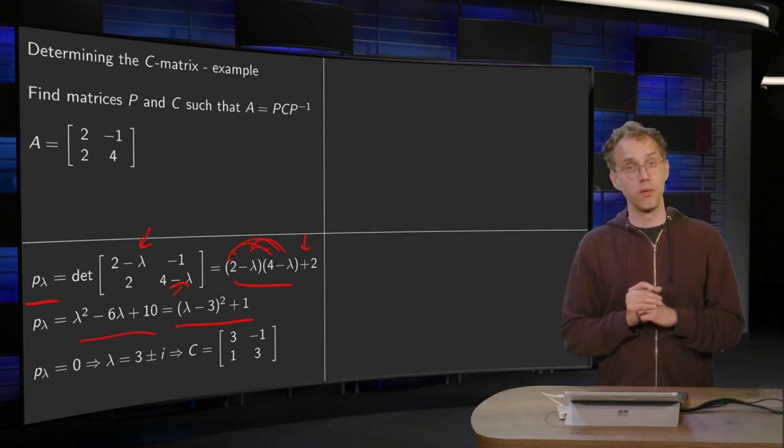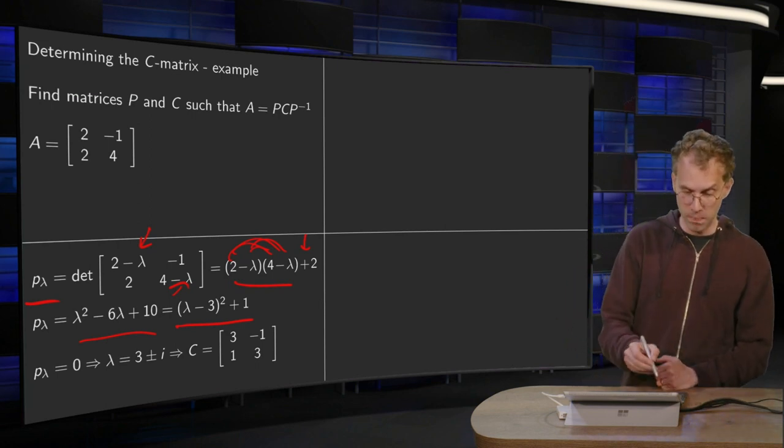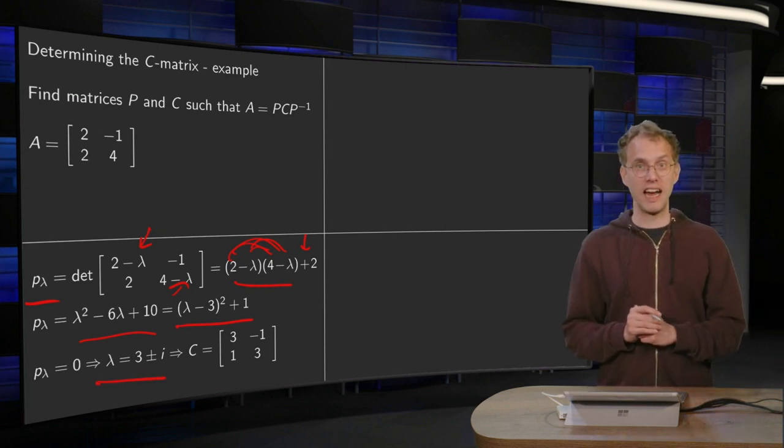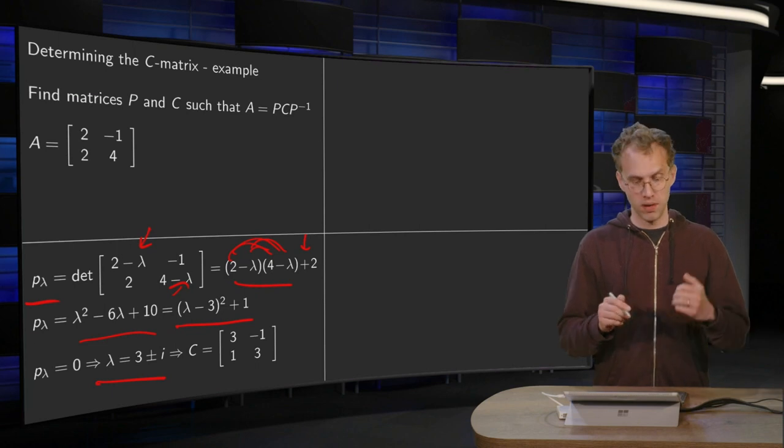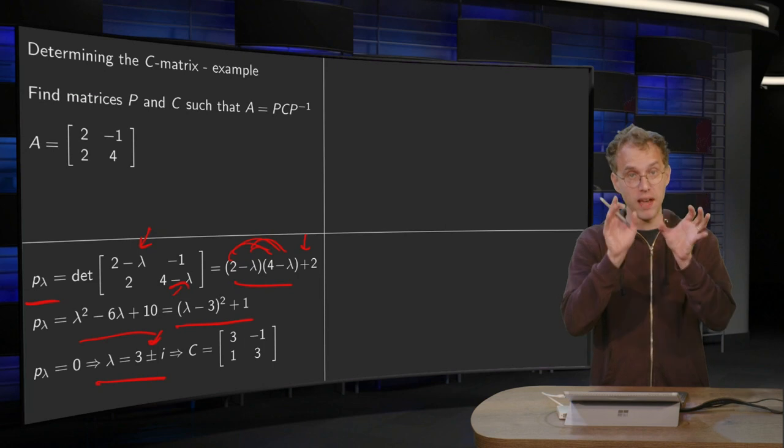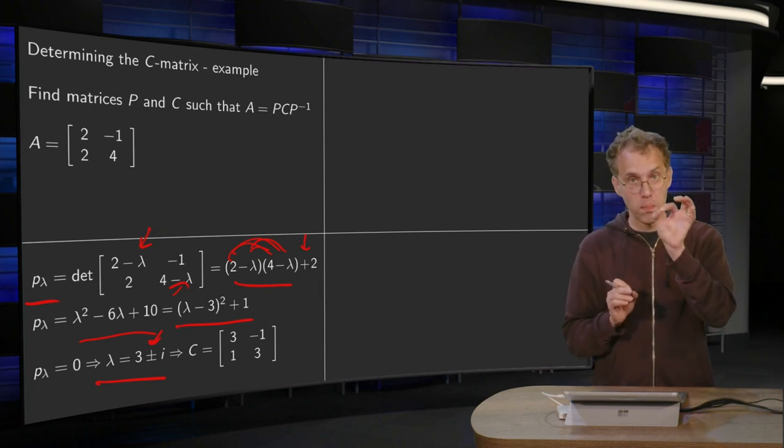In order to compute the eigenvalues, because setting P_λ to 0, we find λ equals 3 plus or minus i. And then we have to choose one of the two. So I thought, okay, let's take the one with the plus sign. So for the remainder of this example, we will take λ equals 3 plus i.